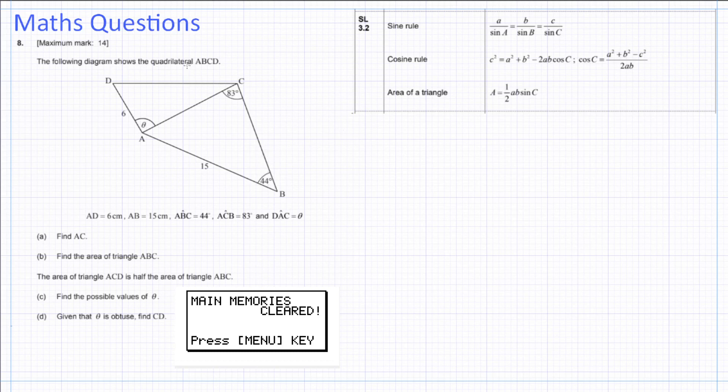The following diagram shows the quadrilateral ABCD. We can see here that this is split into two different triangles. None of them is a right triangle. We've got some information: AD is 6, AB is 15, ABC is 44 degrees, and ACB is 85. We've got this angle here, DAC, which we have labeled to be theta, of which we don't know the value yet.